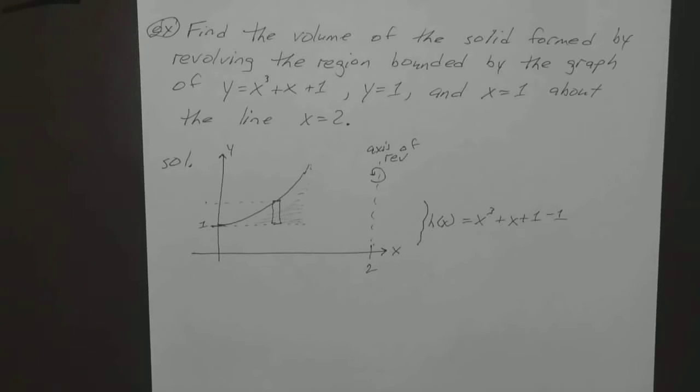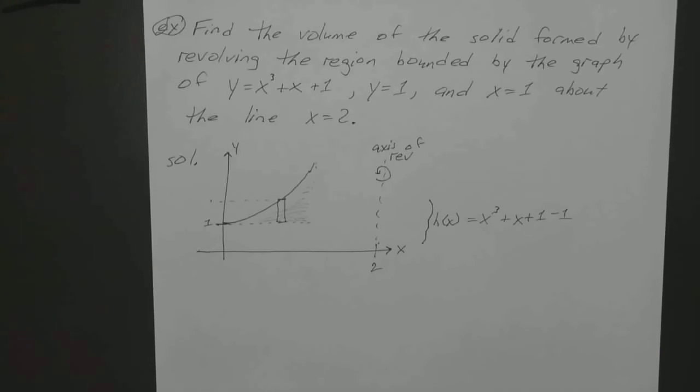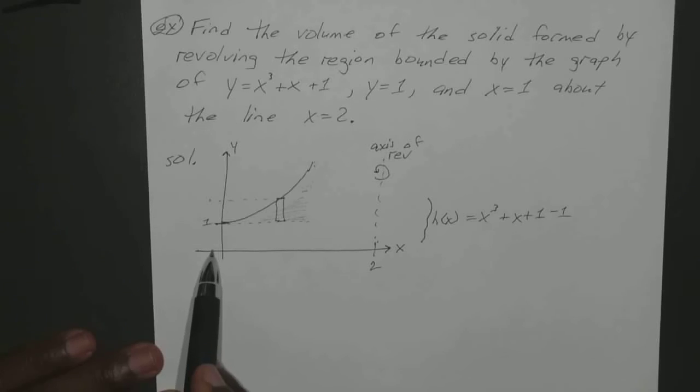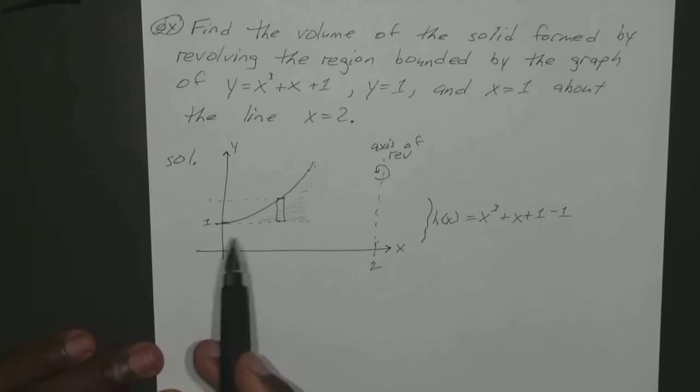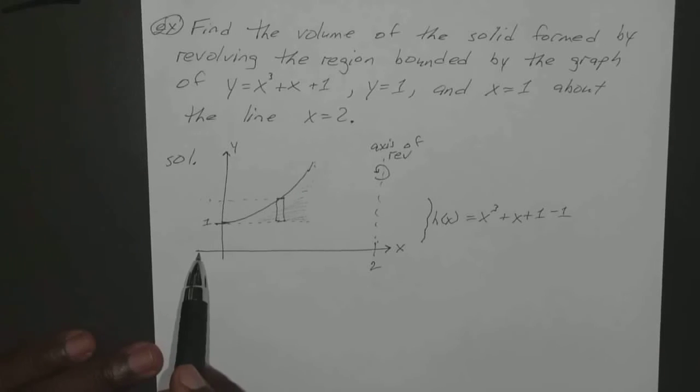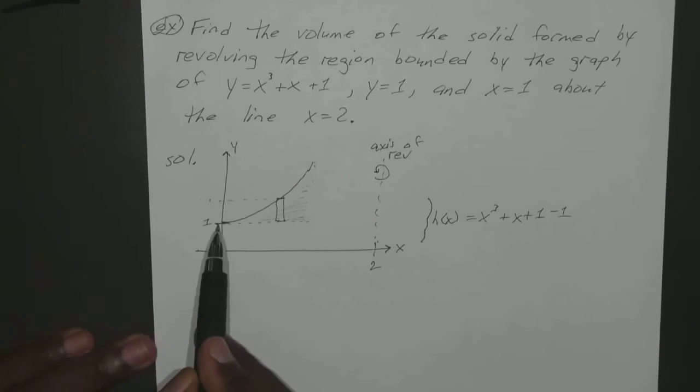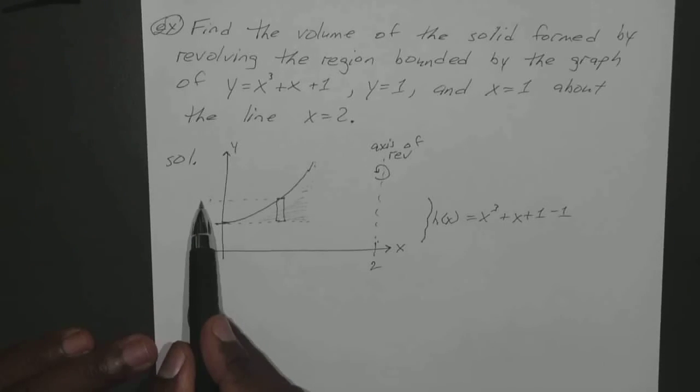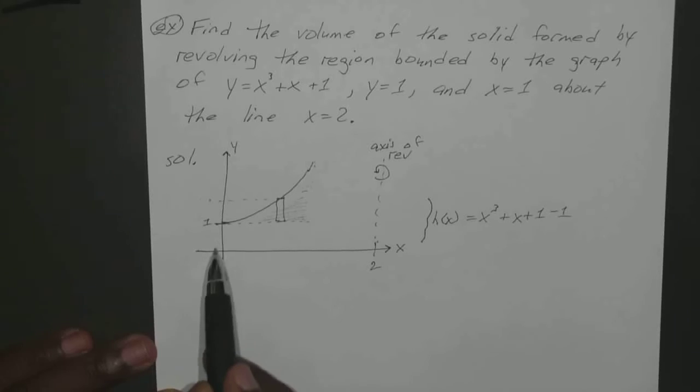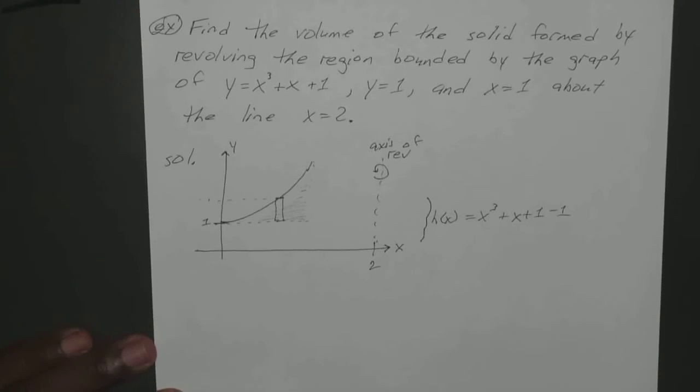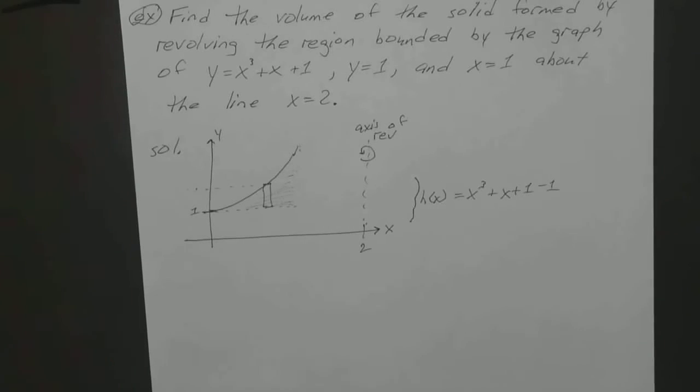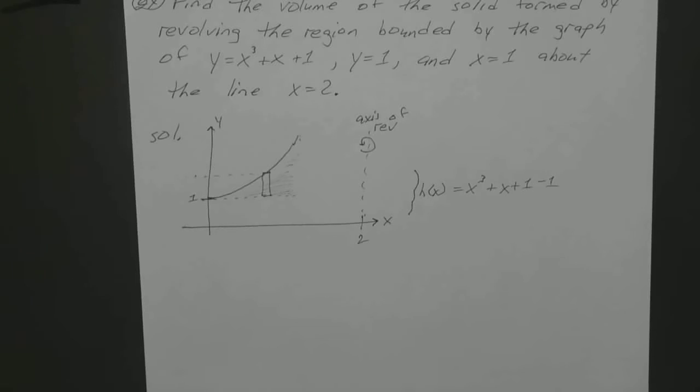Because when you have that height of x cubed plus x plus 1 and you add 1 to it, you have to take that 1 away. Does that make sense? No? Okay. Alright, which part did I lose you? Oh, think of it this way. I wish I would have brought a pencil. It would be easy to erase. Normally, if you were just looking at something that was laying on the x-axis, your height would be from here all the way up to the top. But since it's starting at 1, your height is now from here to the top minus that 1. Does that make sense? Yeah.